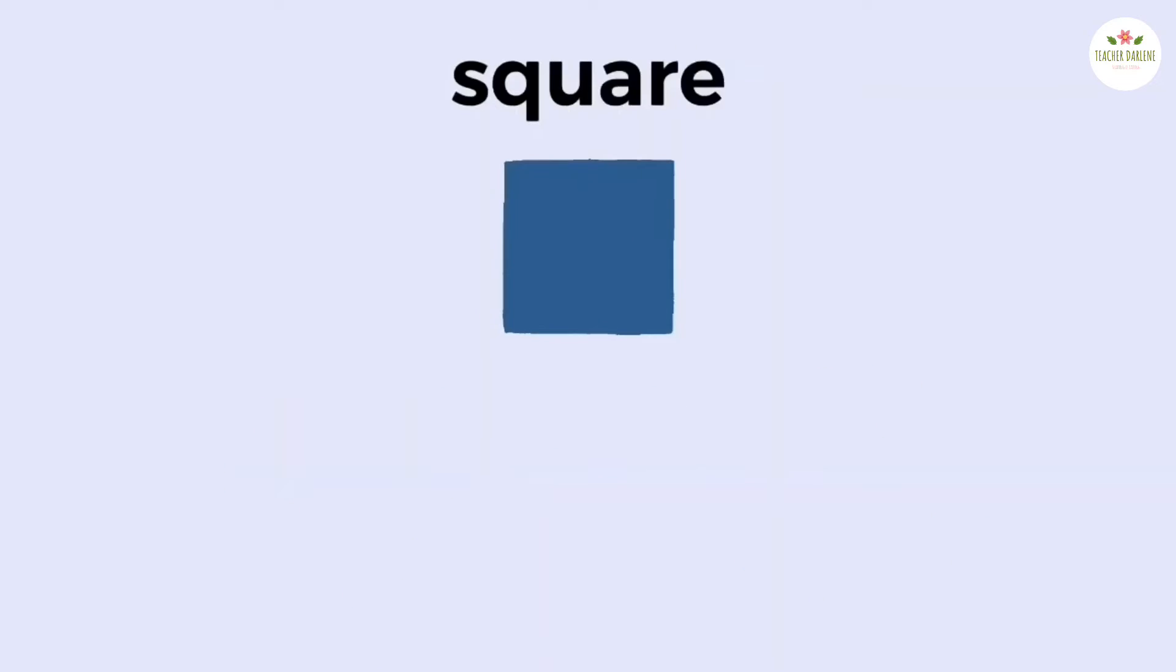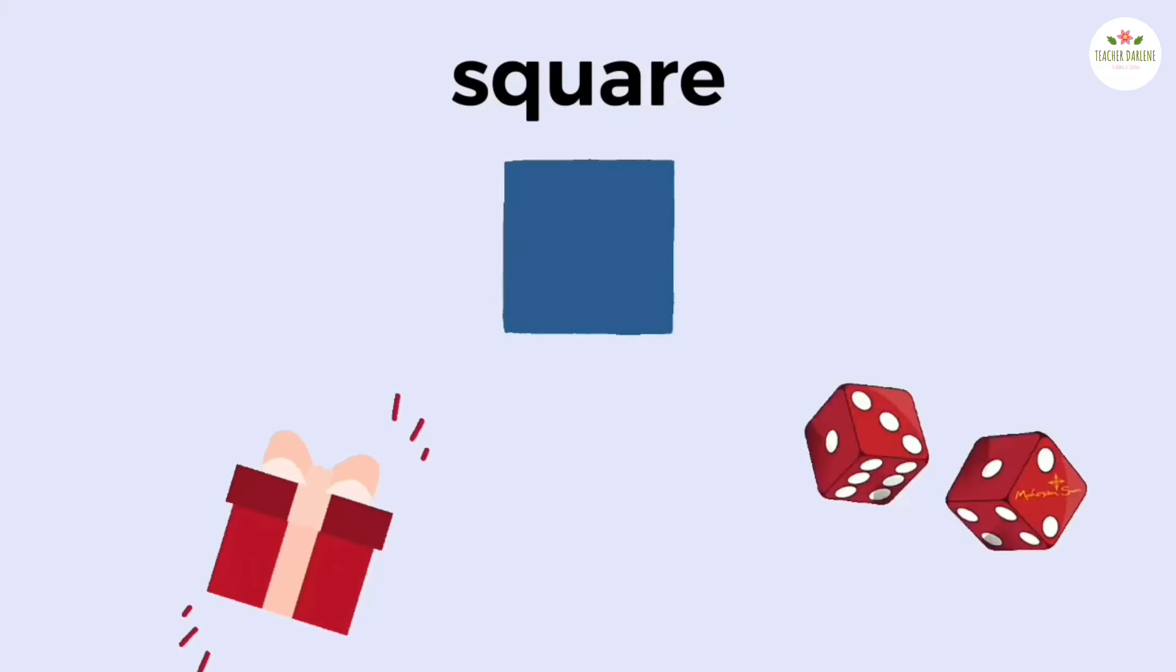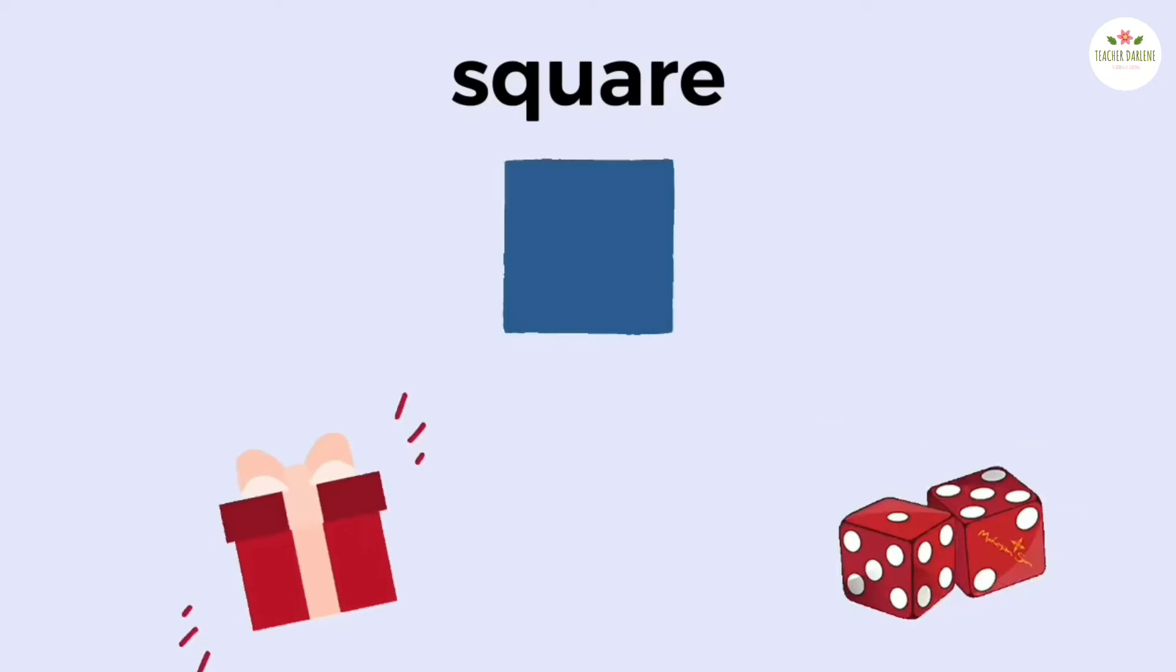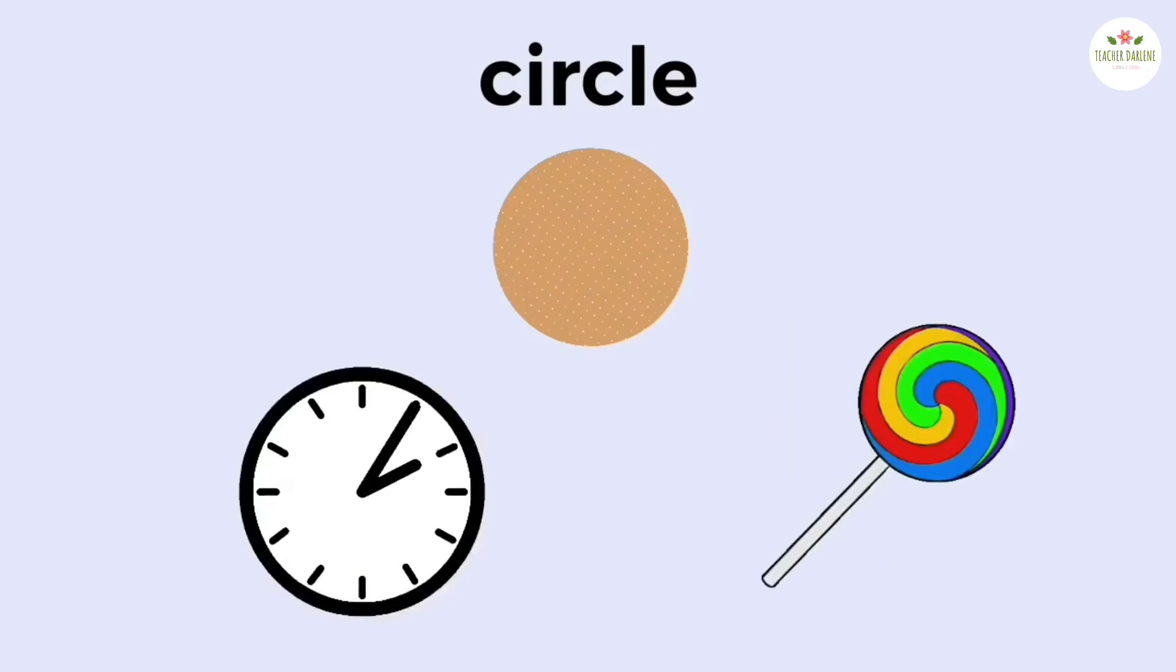How about square? A square gift box and dice are square. A square table and lollipop are square.